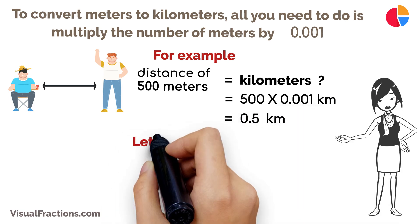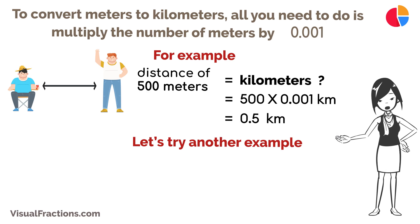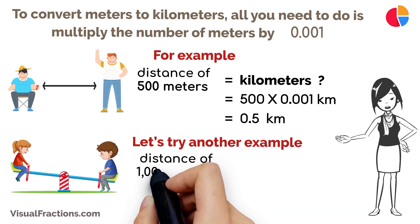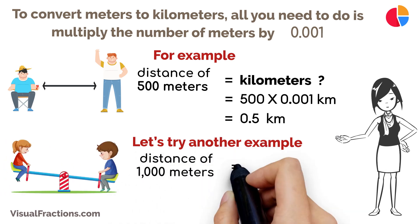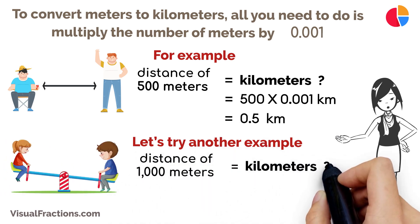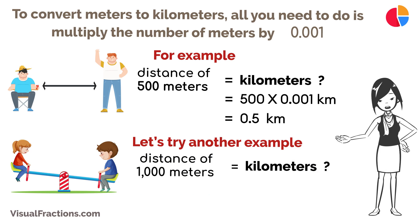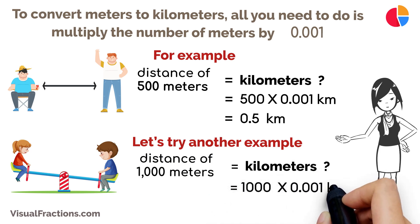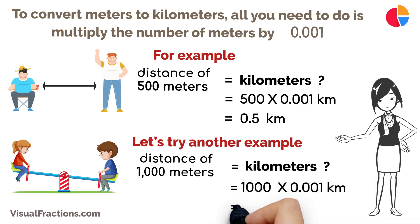Let's try another example. If you have a distance of 1,000 meters, to find out how many kilometers that is, you do 1,000 meters times 0.001, which equals 1 kilometer.